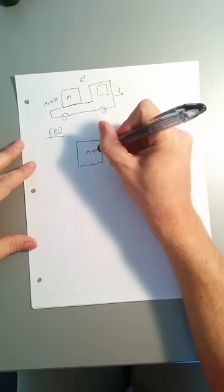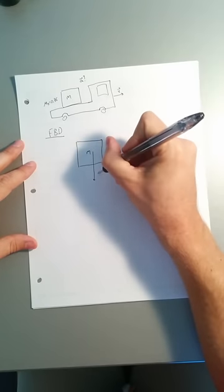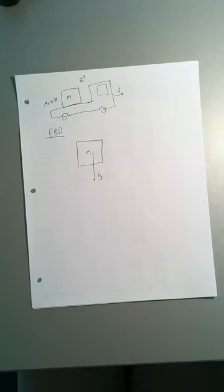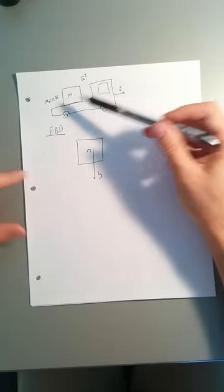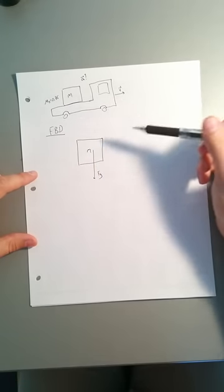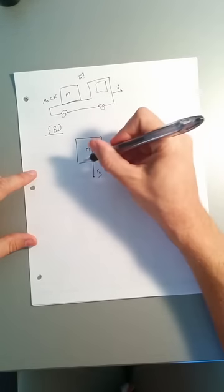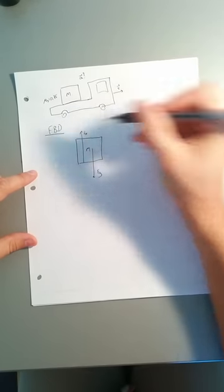What forces are on this crate? We're on Earth, so we always have the force of gravity. The thing is resting on something - the flatbed of the truck. That's pushing up, because if it wasn't pushing up, the crate would go down through the truck. So we know that there's this normal force going up like this.